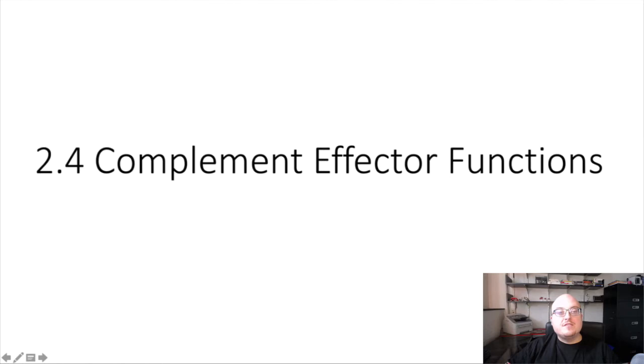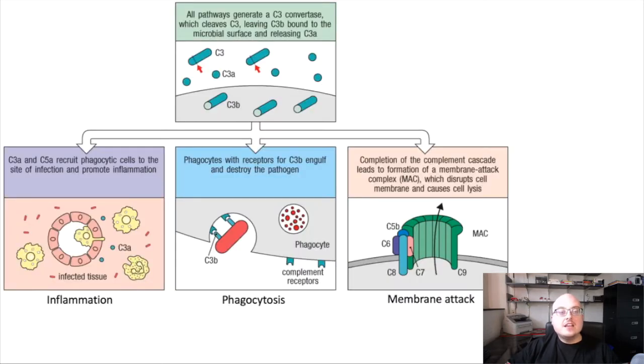So here we're going to discuss the effector mechanisms of all the different complement pathways. To this point we've said numerous times that all complement pathways converge on the formation of C3 convertase. C3 convertase forms C3A and C3B, and C3B in particular is important for initiating many of the effector mechanisms of complement that kill pathogens.